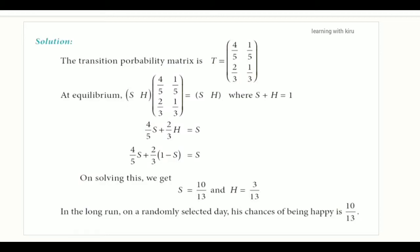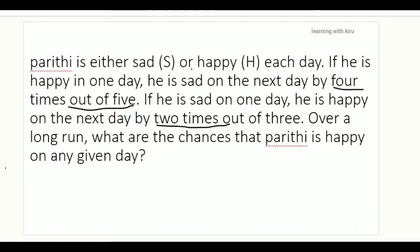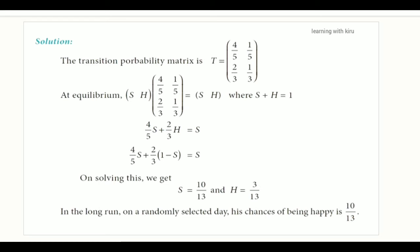We have clues to form this matrix. The states are happy (H) and sad (S), denoted A and B. The clue gives 4 out of 5, so the probability is 4 by 5. The balance probability is 1 by 5. The next clue is 2 out of 3.